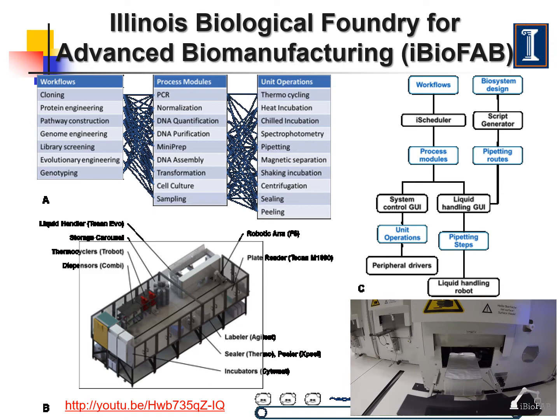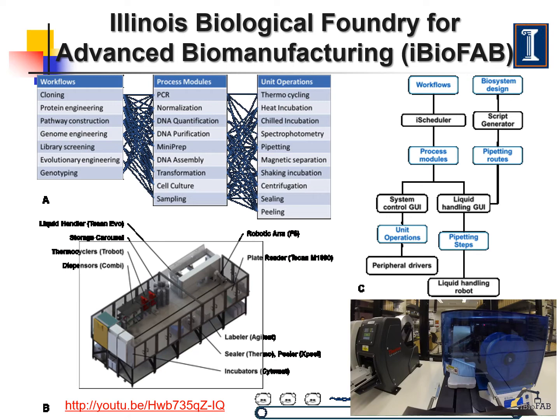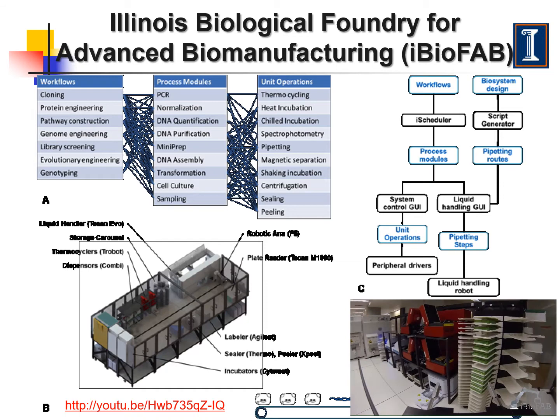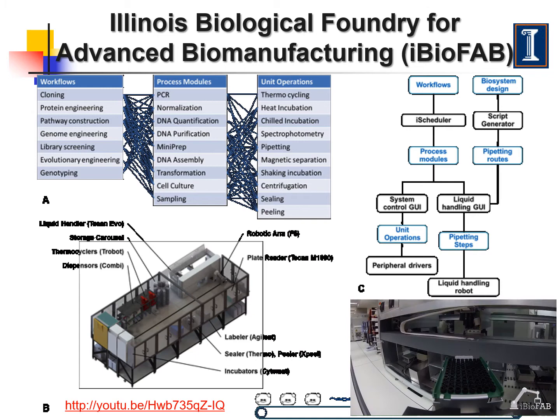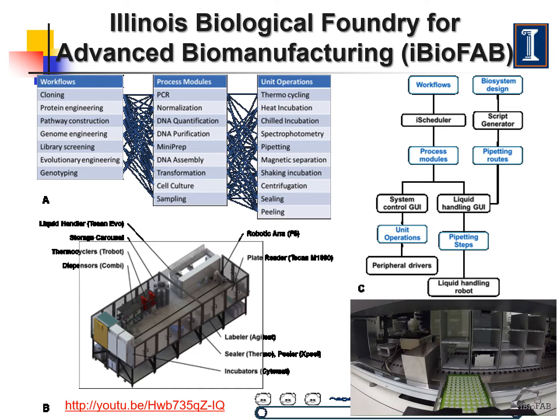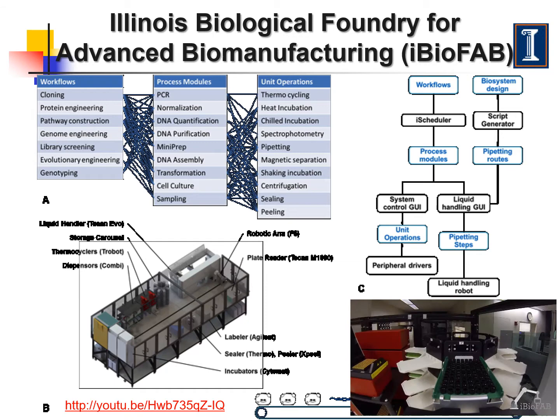In essence, a robotic arm with six degrees of freedom replaces a human researcher to transfer samples from one instrument to another for manipulations. To make the biofoundry as versatile as possible, we break down the complex workflows for various biosystem design applications, such as protein engineering and metabolic engineering, into process modules, which in turn are broken down into unit operations. These unit operations are universal and can be programmed to create custom-designed workflows.